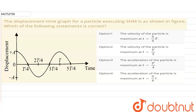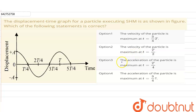Hello everyone. Our question is: the displacement-time graph for a particle executing SHM is shown in the figure. Which one of the following statements is correct? Option 1: the velocity of the particle is maximum at t = 3T/4. Option 2: the velocity of the particle is maximum at t = T/2. Option 3: the acceleration of the particle is maximum at t = T/4. Option 4: the acceleration of the particle is maximum at t = 3T/4.